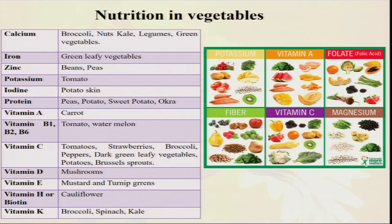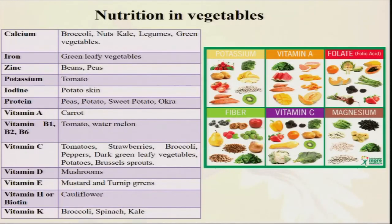What is the nutrition provided by vegetables? Calcium we get from broccoli and legumes; iron from green leafy vegetables; zinc from peas; potassium from tomato; iodine from potato skin; vitamin A — carrot is an excellent source and helps against night blindness. Vitamin B1, B2, and B6 we get from tomato and watermelon. Vitamin C is very important to boost our defense mechanism — if vitamin C concentration in our body is low, we easily get affected by cold and flu. For this, you need leafy vegetables, Brussels sprouts, and broccoli.